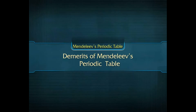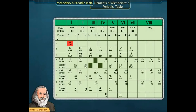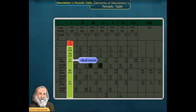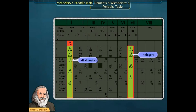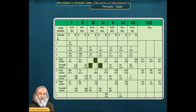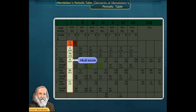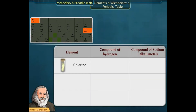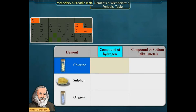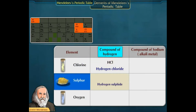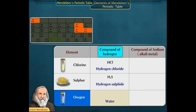One demerit was that Hydrogen showed properties similar to both alkali metals and halogens, and therefore Hydrogen was not given a fixed position in the periodic table. The compound of Hydrogen with Chlorine is Hydrogen chloride (HCl), with Sulphur is Hydrogen sulfide (H2S), and with Oxygen is water (H2O).